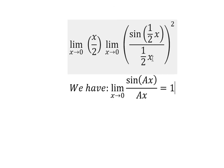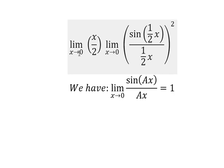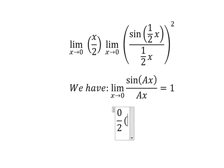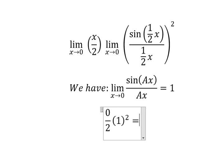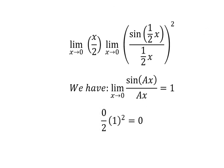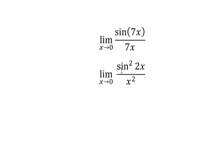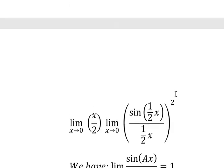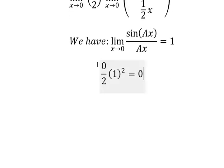So when x approaches zero, sine of one-half x over one-half x equals 1. When x approaches zero, we put zero in and get zero. So we have zero over 2 multiplied by 1 squared, which gives zero. This is the final answer.